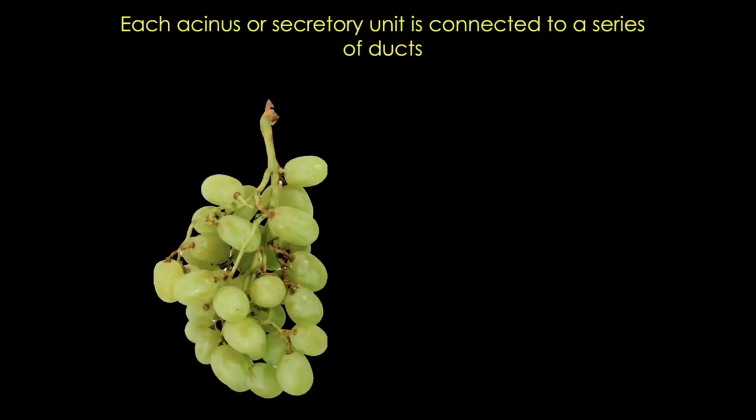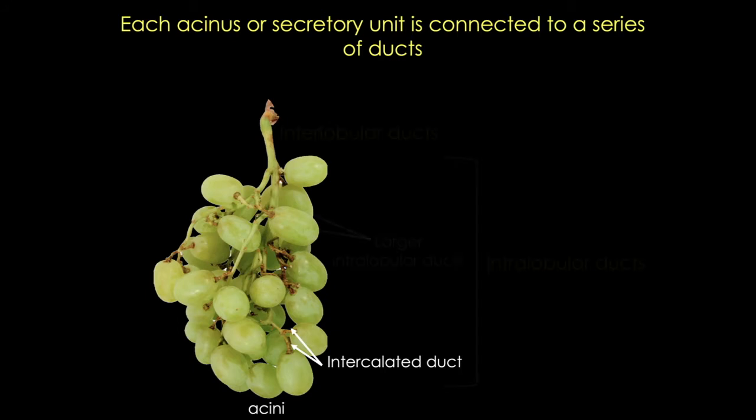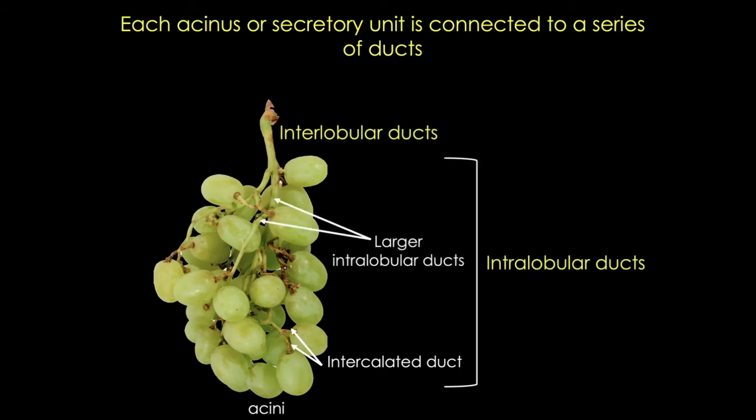They both contain secretory units called acini, which look a lot like grapes that are connected by a series of ducts. First we see the intercalated duct, which is like that stem coming out of an individual grape, and then there are a series of larger ducts.